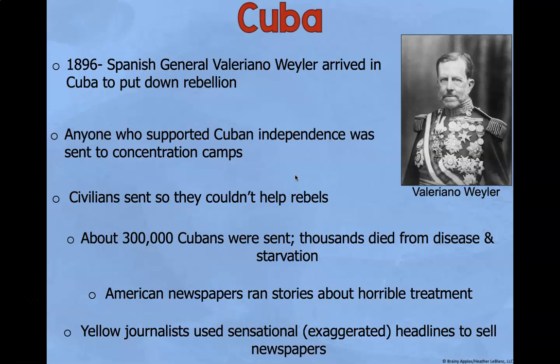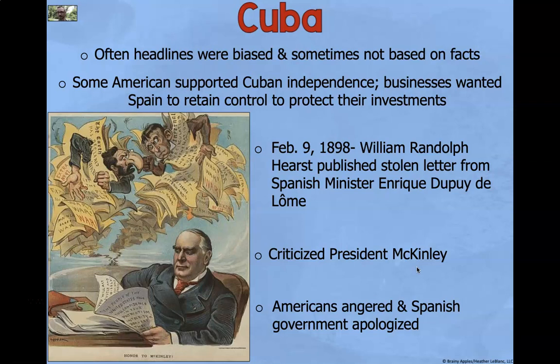American newspapers ran stories about the horrible treatment, and yellow journalists used sensational or exaggerated headlines to sell newspapers. Often, headlines were biased and sometimes not based on facts. Some Americans supported Cuban independence; however, businesses wanted Spain to retain control to protect their investments. On February 9th, 1898, William Randolph Hearst published a stolen letter from the Spanish minister Enrique Dupuy de Lôme. In that letter, it criticized President McKinley. Americans were angered and forced the Spanish government to apologize.